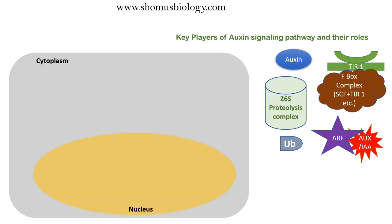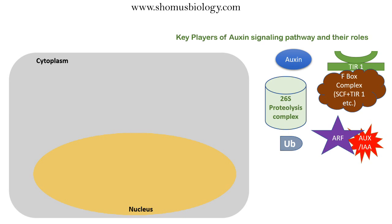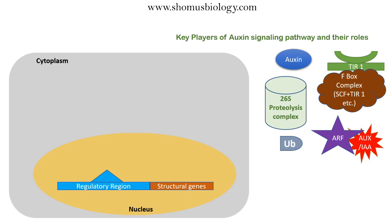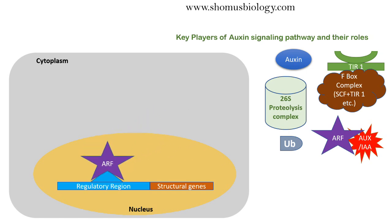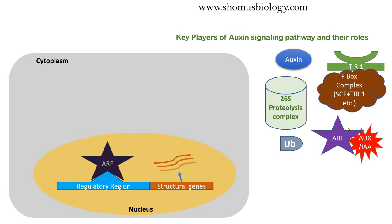Other key players are the 26S proteolysis complex and ubiquitin. Looking at the cell, we have a cytoplasm and a nucleus. For every signaling pathway, the activation of transcription factors ultimately happens, and the transcription factor activates auxin response genes. In the nucleus, we have the regulatory region and structural genes that will be transcribed into target mRNA and utilized for producing proteins necessary for cell growth. ARF acts as a transcription factor — it binds to the regulatory region, and the structural genes are transcribed into specific mRNA that is translated into proteins for the auxin response.